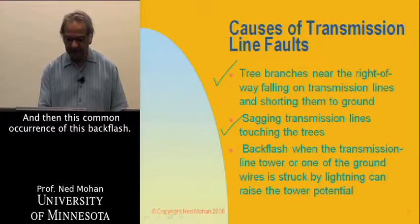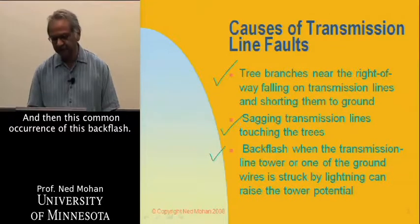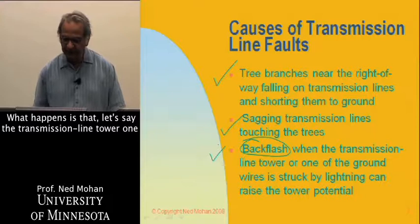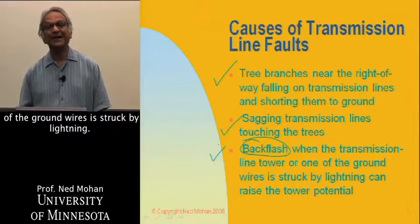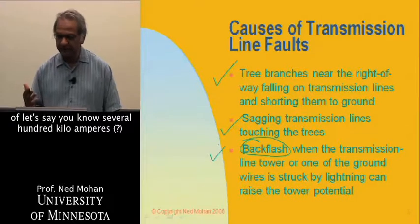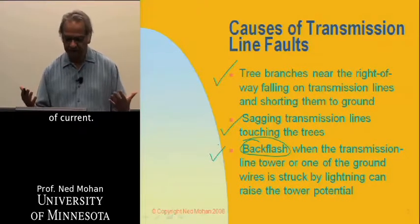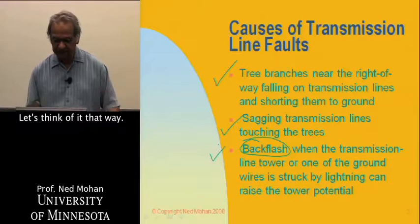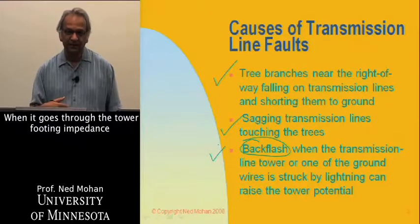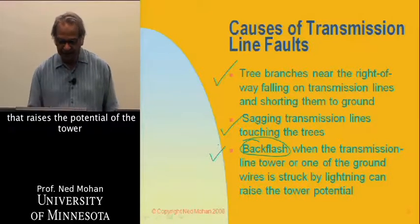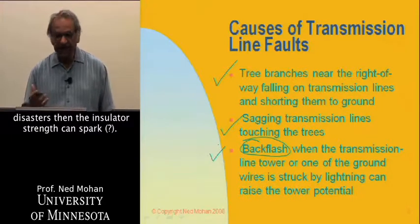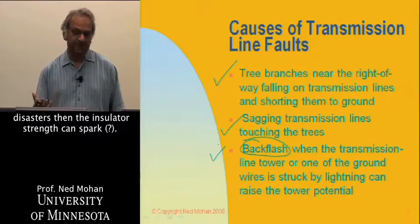And then there's this common occurrence of backflash. What happens is, let's say, the transmission line tower or one of the ground wires is struck by lightning. That lightning consists of several hundred kilo amperes of current. When it goes through the tower footing impedance, that raises the potential of the tower. If there are no surge arrestors, then the insulator strain can spark over.